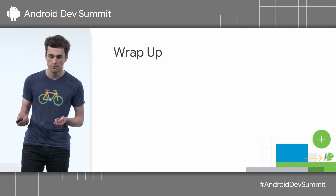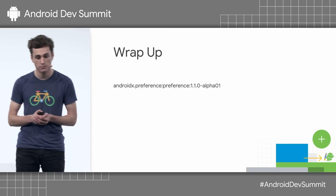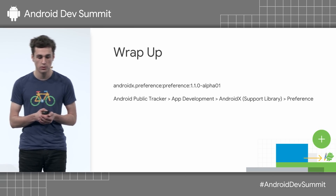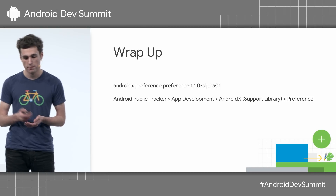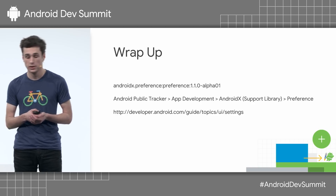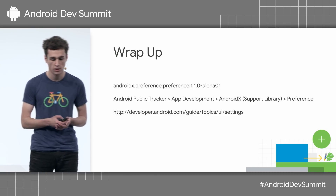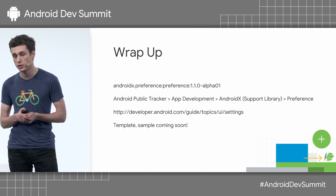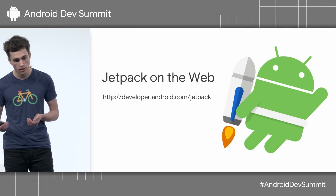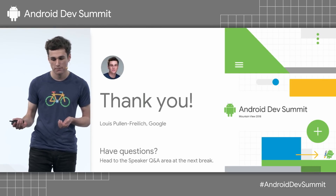To wrap things up, we've recently released 1.1 Alpha 1, so please, if you haven't already, get it and try using dynamic summaries and other recent features. Please file any bugs and feature requests to this component on issuetracker.google.com. We've recently updated the Android settings guide to make use of the AndroidX preference library — please check it out for further information on some of the things I've talked about in this talk and some other features out of scope here. And we're working on a template for Android Studio as well as public samples demonstrating this new library, coming soon. For more information on Android Jetpack, you can go to developer.android.com/jetpack. Thank you for listening.